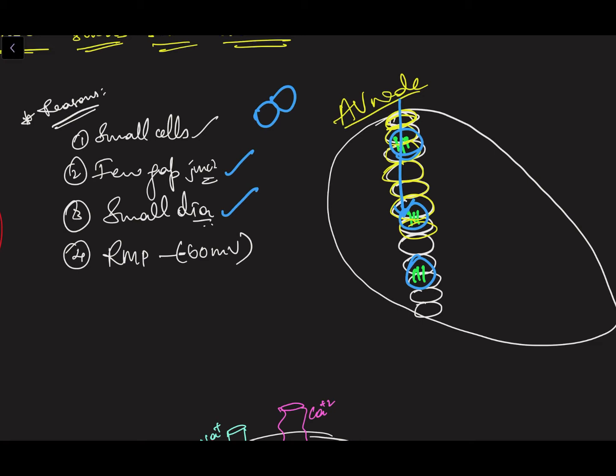The third reason is the small diameter of the cells. A cell from the AV node has a pretty small diameter, and less diameter offers more resistance to current flow. Think of water flowing through a pipe — if you reduce the diameter of the pipe, the speed decreases; if you increase the diameter, more water flows out. The same applies here: AV nodal cells have small diameter, offering more resistance and decreasing current speed.